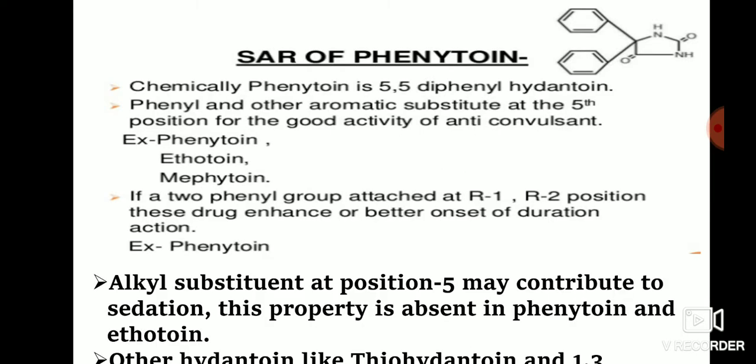First we see phenytoin. Chemically, phenytoin is 5,5-diphenylhydantoin — the fifth position has two phenyl groups. Phenyl and other aromatic substitutions at the fifth position are important for good anticonvulsant activity. Examples include phenytoin, ethotoin, and mephenytoin.